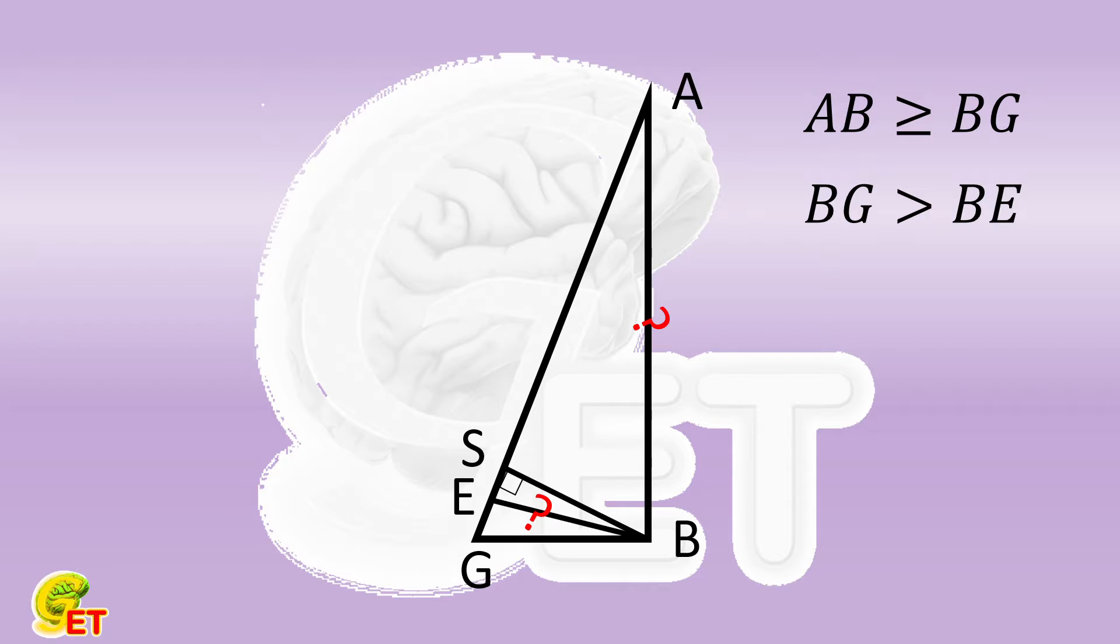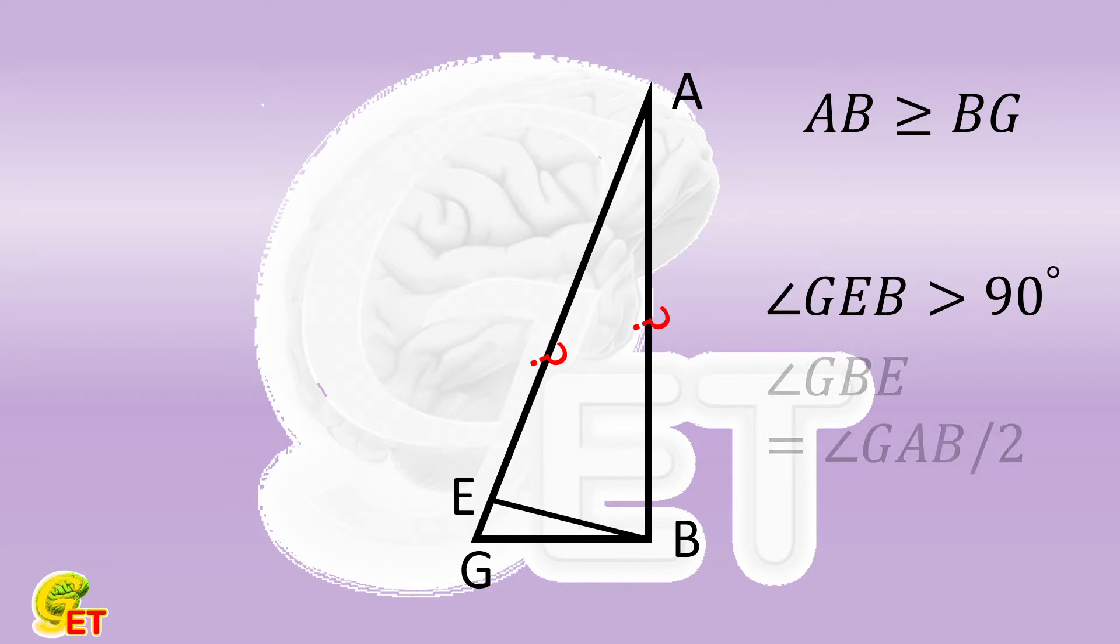Then is it possible that AB is equal to AE? If they are equal, the angle AEB must be acute and the angle GEB obtuse, which must be the vertex angle of the isosceles triangle BGE. The angle GBE is complementary to the angle ABE, so it is equal to half the angle GAB.